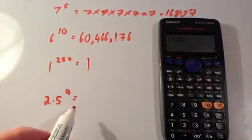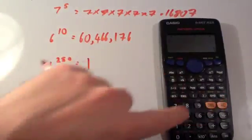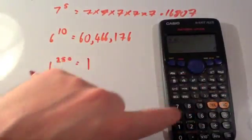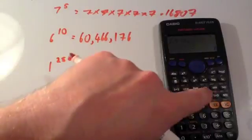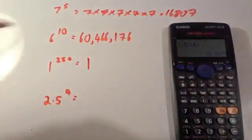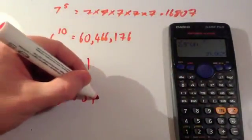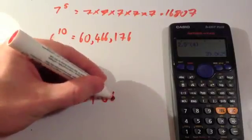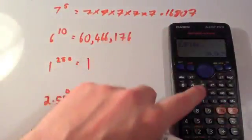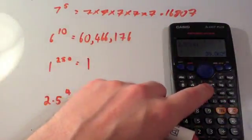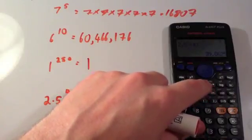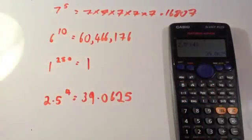Finally, 2.5 to the power of 4. Enter 2.5, the power button, then 4, close brackets, equals 39.0625. That power button — the X with a little white box above it — is extremely useful to use whenever you're using your calculator.